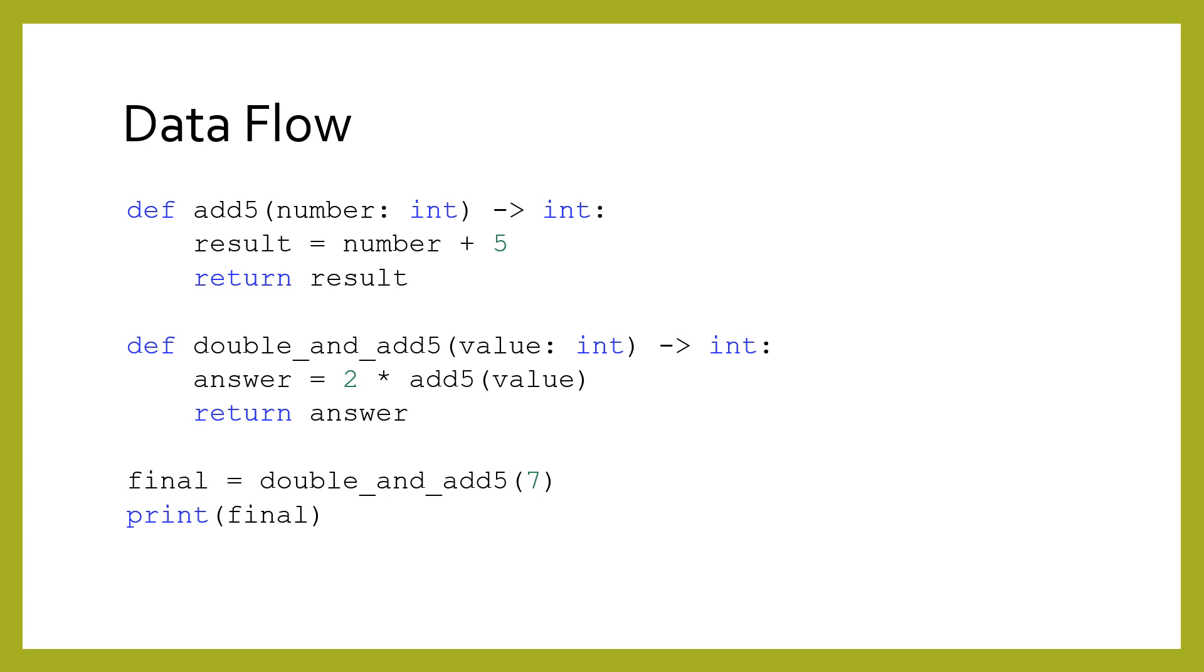Up until now, that flow went from the top of the module to the bottom. But now, program execution will actually jump around according to the rules of function calls and returns. It is critical to track what data is available at each step of the program. This is especially true when we start calling functions from within functions.